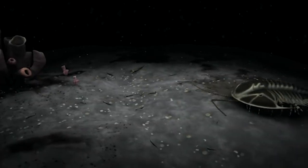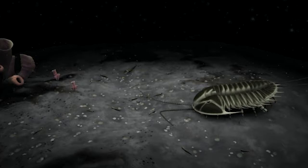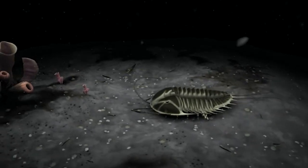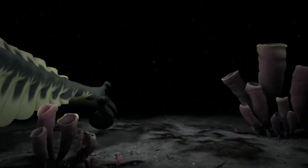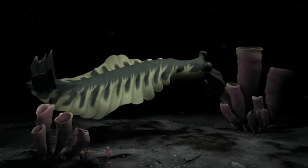In the Burgess Shale we find some of the first swimming organisms, such as trilobites and Marrella. And we can't forget the largest predator in the Cambrian communities, the Anomalocaris.